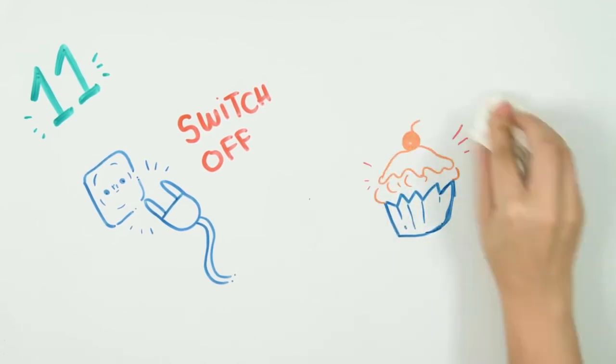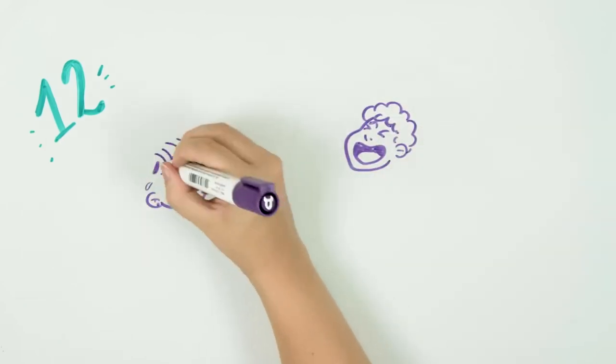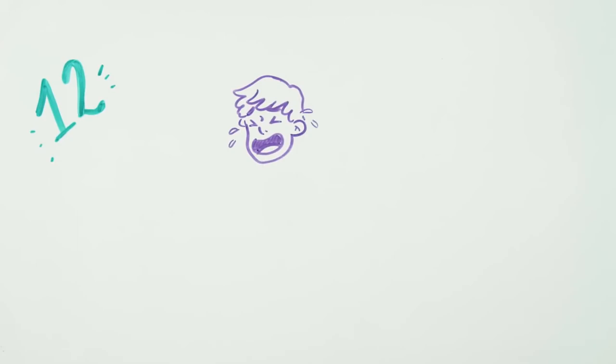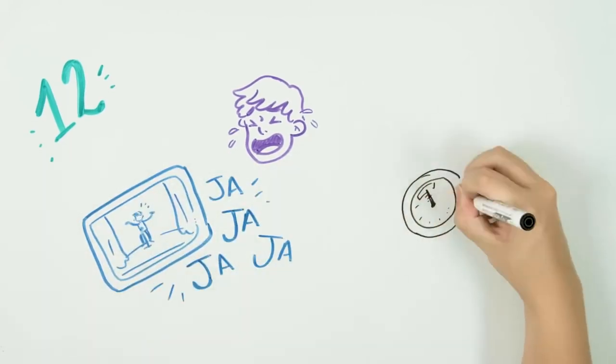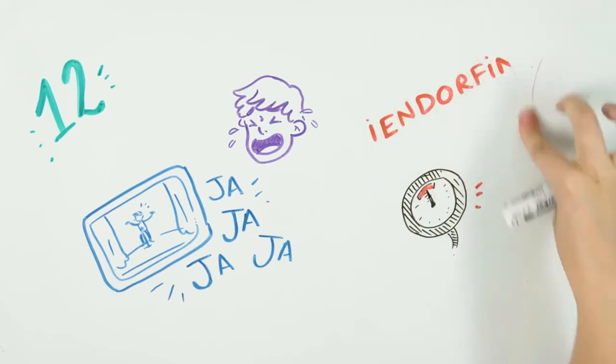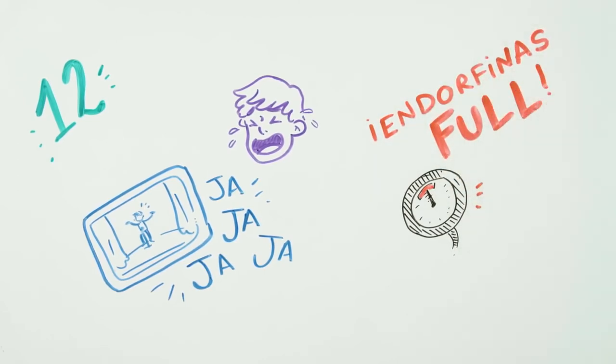Idea number 12: Have a laugh. You heard that right. Do this by surrounding yourself with positive and fun people with whom you have guaranteed laughter, or binge on monologues or jokes on YouTube. Laughter will fill your blood with endorphins, and with them you will feel relaxed, happy, and positive.